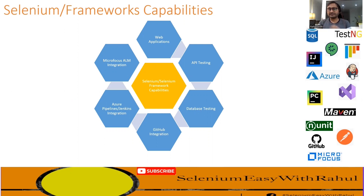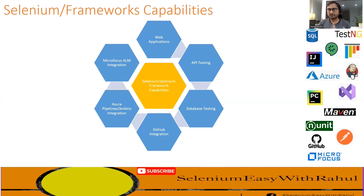Moving to the next capability: Azure Pipelines and Jenkins integration. With pipelines we can trigger our automated test cases, and results are automatically uploaded back to the pipeline. Lastly, Selenium has direct integration with Micro Focus ALM — we can trigger test cases from ALM, and it automatically changes the test status to pass or fail and uploads screenshots to Micro Focus ALM.